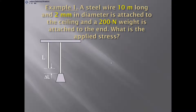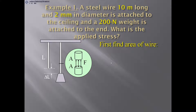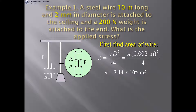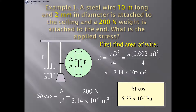Example: A steel wire 10 mm long and 2 mm in diameter is attached to the ceiling with a 200 N weight attached to the end. Find the applied stress. First, find the area: A = πD²/4 = π(0.002)²/4 = 3.14 × 10⁻⁶ m². Stress = F/A = 200 N / 3.14 × 10⁻⁶ m² = 6.37 × 10⁷ Pascal.